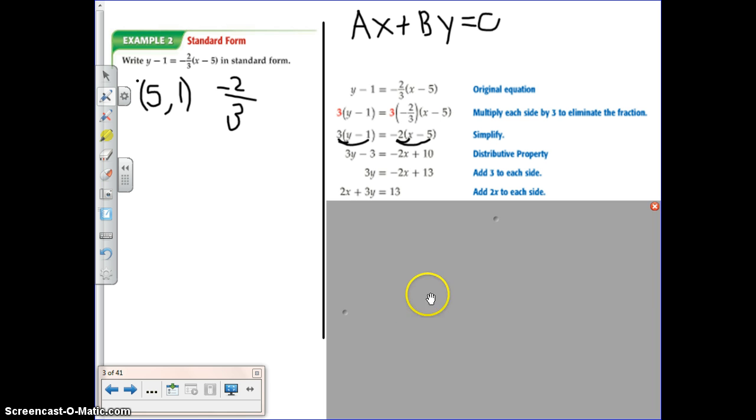So 2x plus 3y equals 13, and I think I am all done. Yes, I am. So we can see here, this is our Ax, our By equals C. So we have just taken this original point-slope equation and written it into standard form.